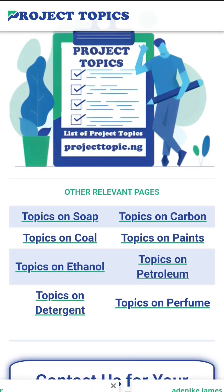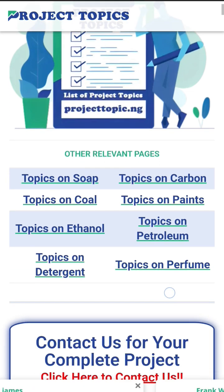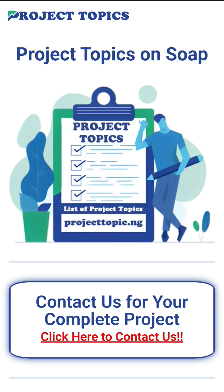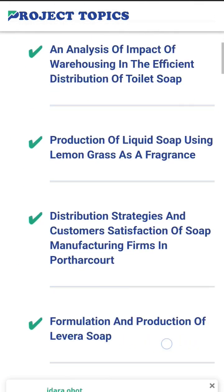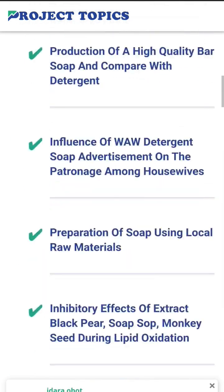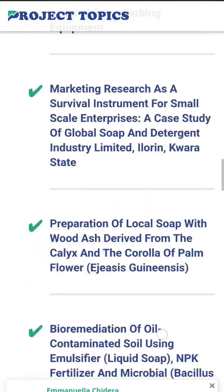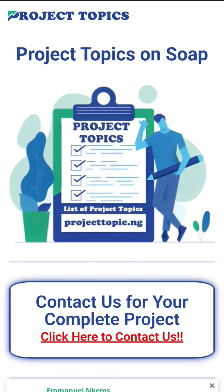At the top of the page, there are some sub-subject matters, like topics on ethanol or topics on soap. If you click on 'topics on soap,' you will see a list of topics related to soap. That is how you can navigate to find good project topics you can use for your final year project.